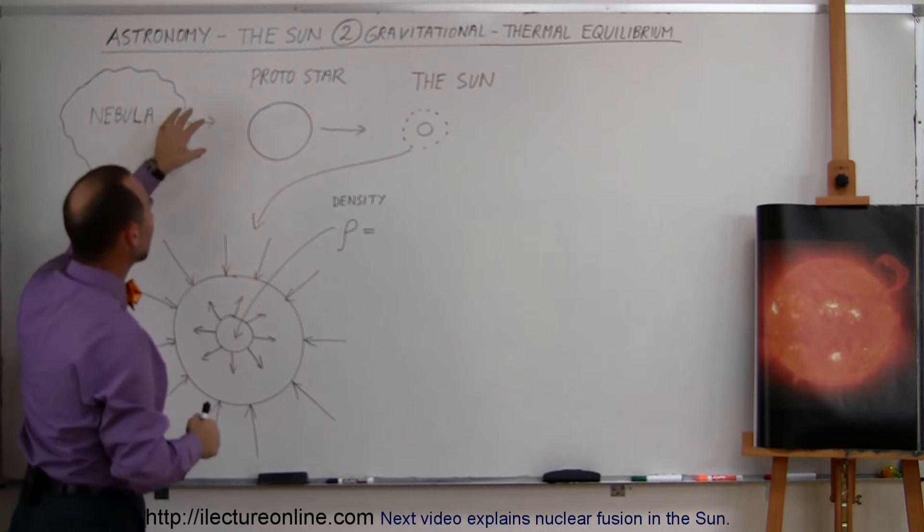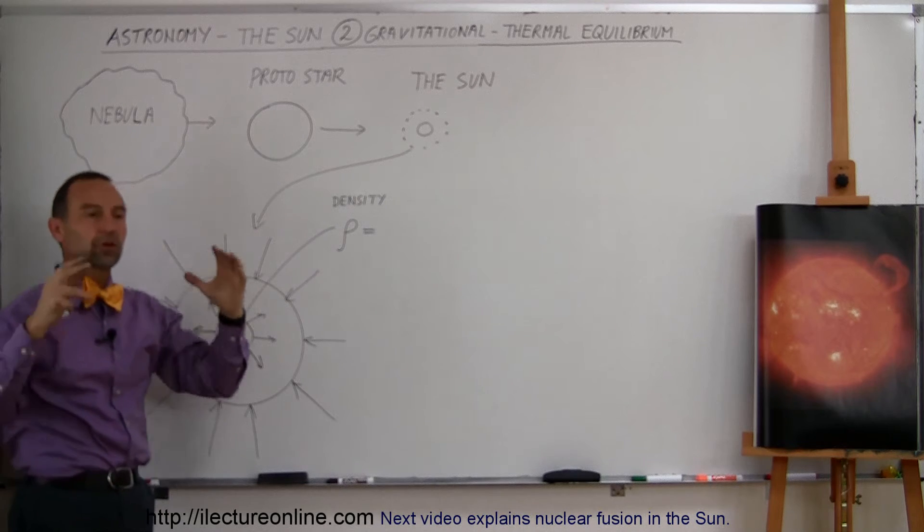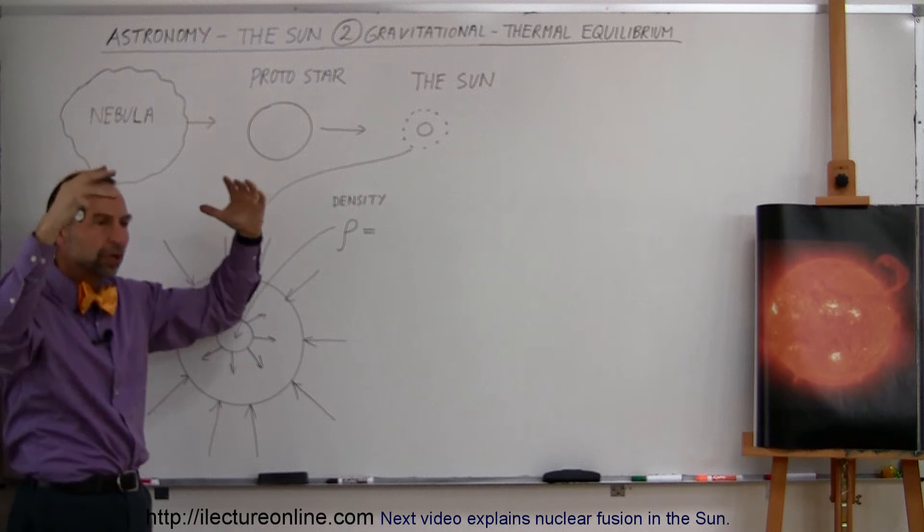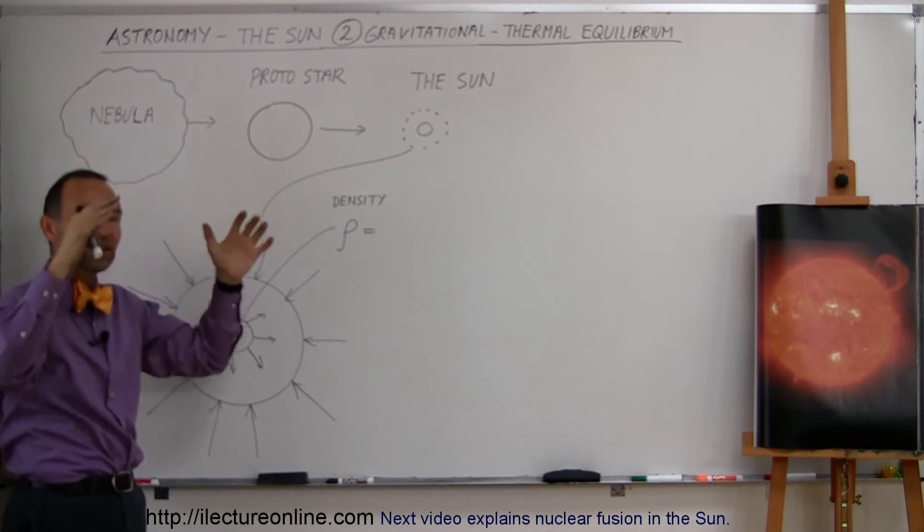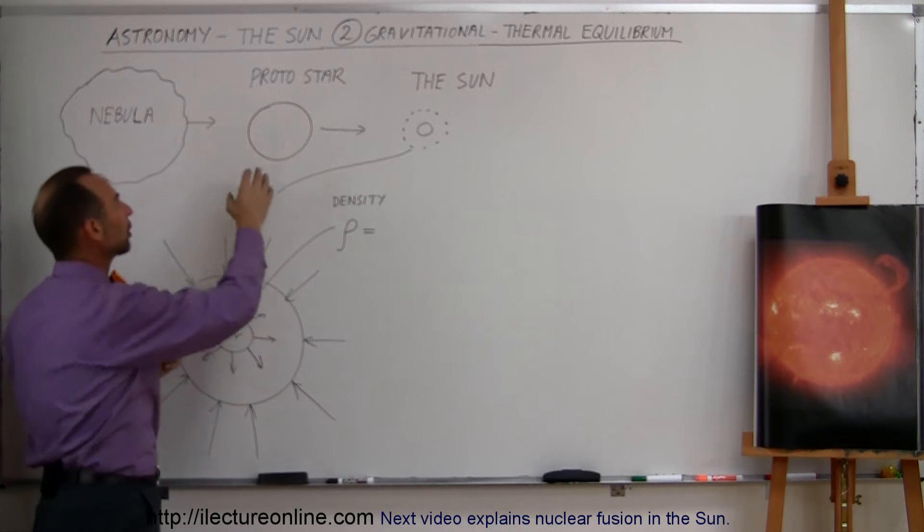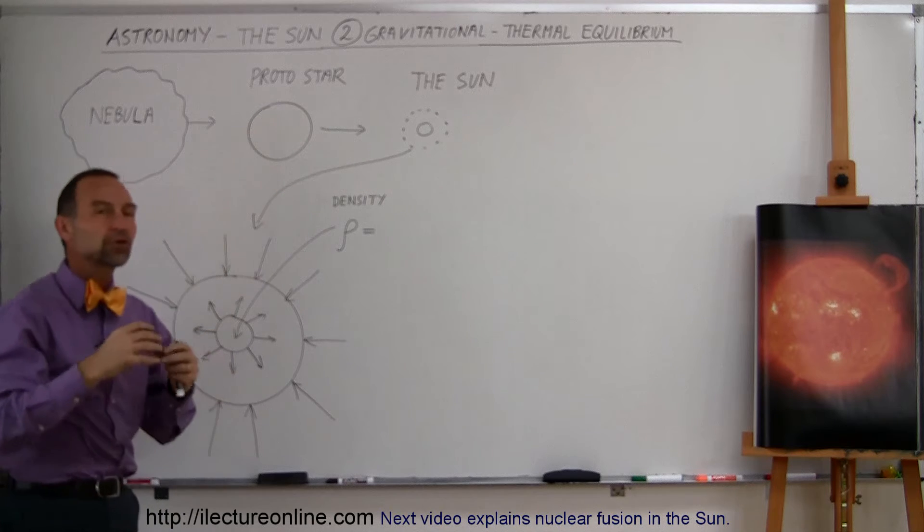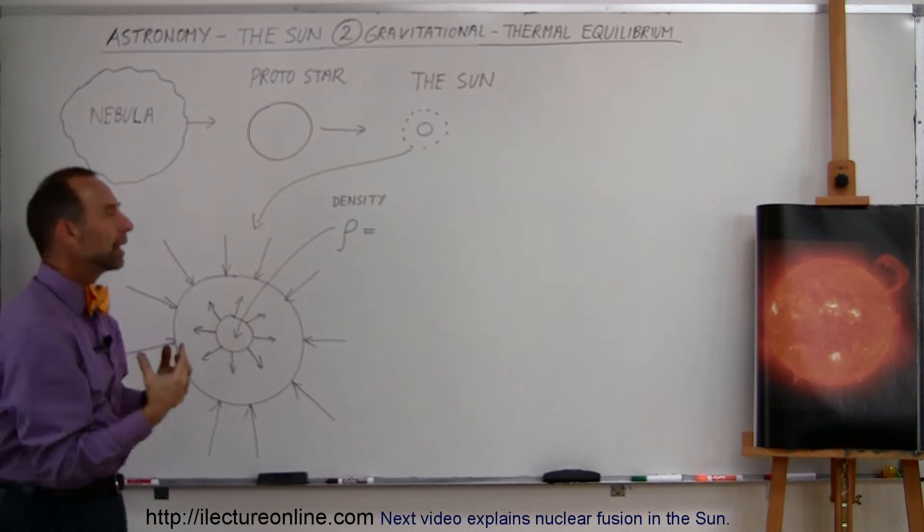But from a nebula, it turned into what we would call a protostar. So as the nebula collapses, gravity keeps on pushing more and more, and the molecules get closer and closer together, and eventually they form a spherical region, which we call a protostar, and the pressure begins to build up inside the protostar, and heat begins to be generated.